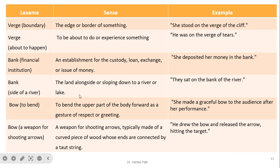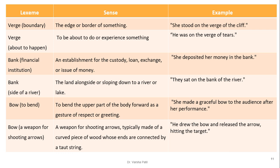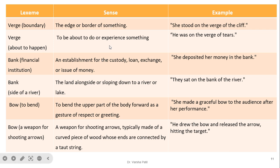The word 'bow' has two senses: to bend the upper part of the body forward as a gesture of respect — 'she made a graceful bow to the audience after her performance' — and a weapon for shooting arrows — 'he drew the bow and released the arrow, hitting the target.' As humans we understand these easily, but for machines we need tools like WordNet in lexical semantics to provide variety of information so the computer can disambiguate the correct meaning.